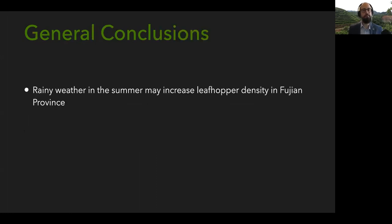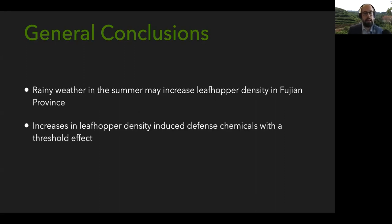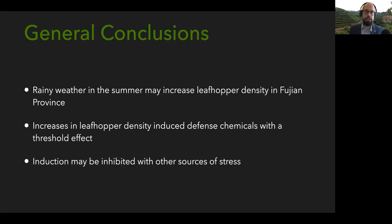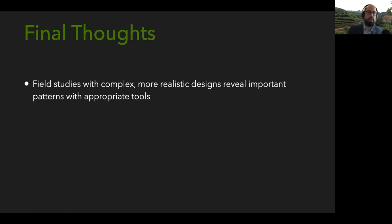To wrap up: rainy weather in the summer might increase leafhopper density in Fujian province. Those increases in leafhopper density could result in a change in induced chemistry of the tea plant, with a potential threshold of around 0.5 leafhoppers per leaf — a potential minimum density target for making bug-bitten tea. I also found that induction might be inhibited by other sources of stress. While Fujian is unlikely to experience major drought stress soon, Taiwan experienced a severe drought last year, and drought stress at the same time as making bug-bitten tea might reduce the effectiveness of that strategy.